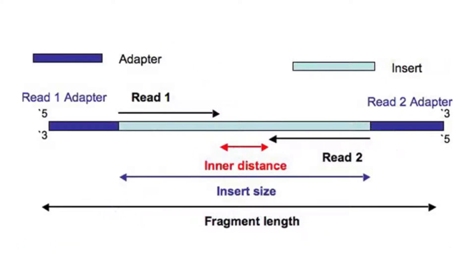One of the parameters that can be set is the insert size. This is the size of the fragment between the sequencing adapters, so it is the distance between the start of your actual sequence and the end of that sequence. Sometimes you will hear people refer to this as the fragment length, but that is incorrect, because the fragment length includes the sequencing adapters. The inner distance is the distance between the ends of both reads.